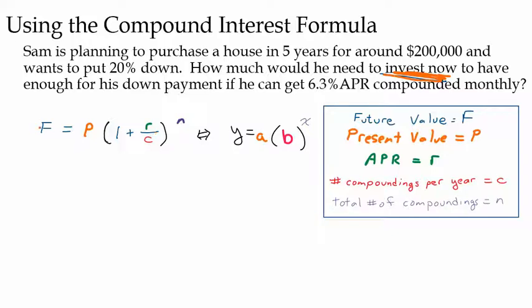Let's start with the future value. We know that he wants to buy a house for $200,000, but he's not trying to get $200,000. He's not paying cash. He's trying to get enough for his down payment. So his future value, he wants to have 20% of $200,000 for his down payment. So 20% of $200,000 would be, let's see, 10% would be $20,000, so 20% would be $40,000.